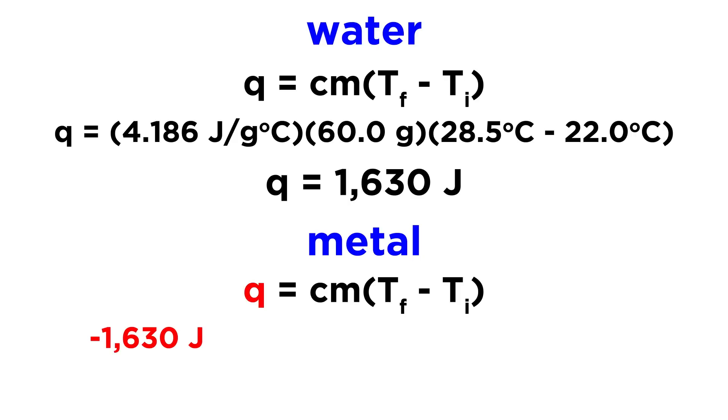So Q, we know. It is going to be the opposite of the heat absorbed by the water. So instead of 1,630 joules, we have negative 1,630 joules. That is the heat that was released by the metal. Now that is going to equal C, which we will leave as C because we do not know it yet. That is what we're going to solve for. So we'll leave that as C, times M, which is 59.7 grams. That was the mass of the metal that was given to us.